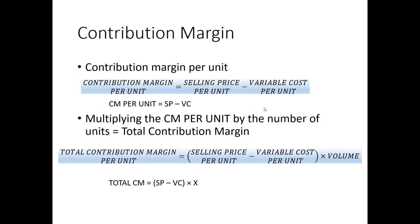The contribution margin per unit represents the excess of the sales price over the variable cost — the amount that contributes to the payment of fixed costs, and once fixed costs are covered, contributes to profit. It's similar to markup, but not quite the same — a similar idea though.